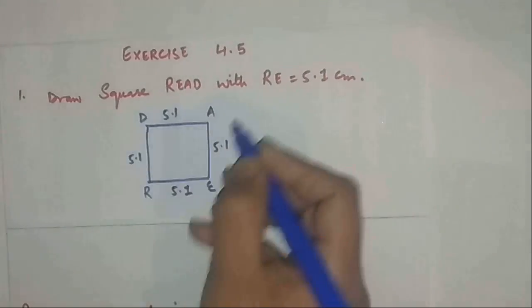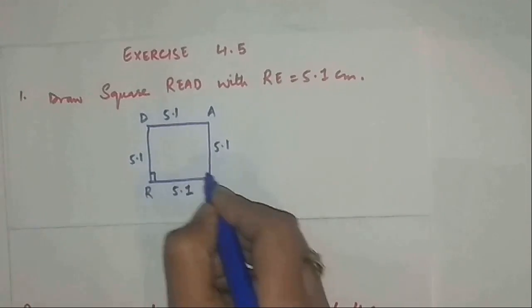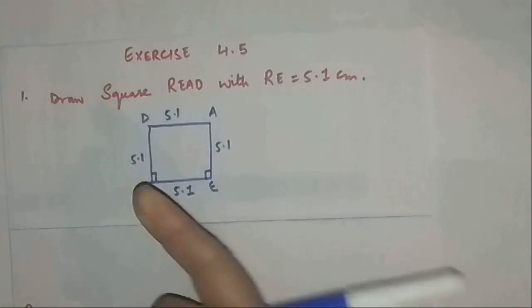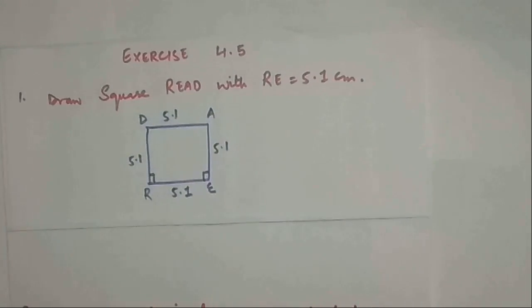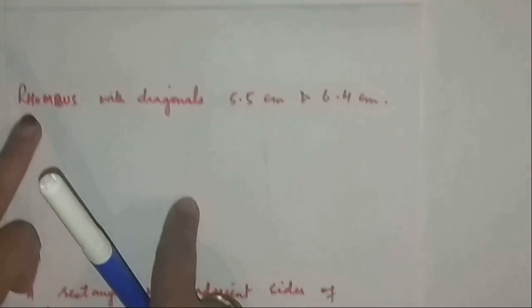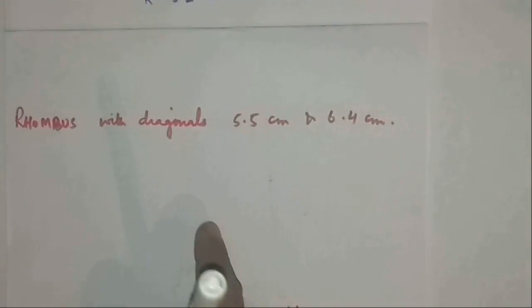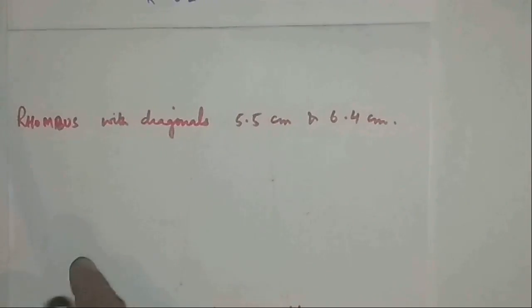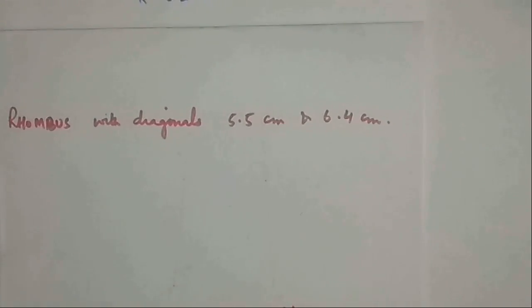You know that all the angles are 90 degrees each, so this will be 90 and this will be 90 as well. The same question has already been discussed. We will try doing the same now. In part number two, we are supposed to make a rhombus with only diagonals, and this question has also been already explained to you.